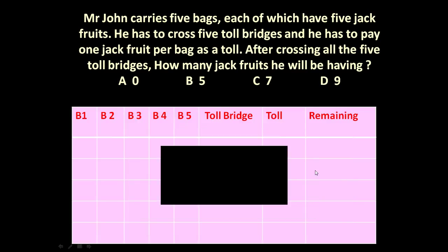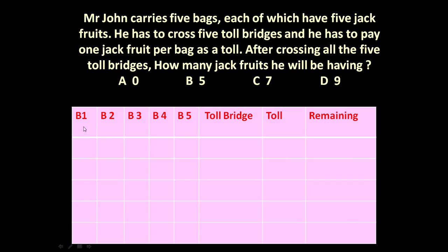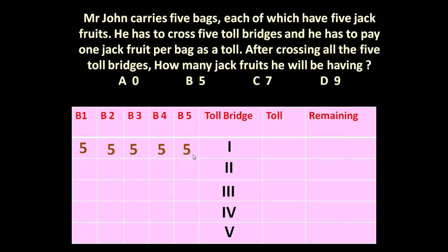To answer this question, let us draw a table. There are 5 bags: bag 1, bag 2, bag 3, bag 4, bag 5. The columns are toll bridge number, toll he has to pay, and remaining jackfruits. We have 5 toll bridges — 1, 2, 3, 4, 5. He has 5 bags, each having 5 jackfruits.